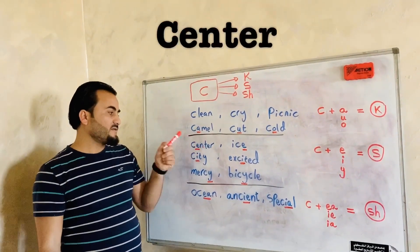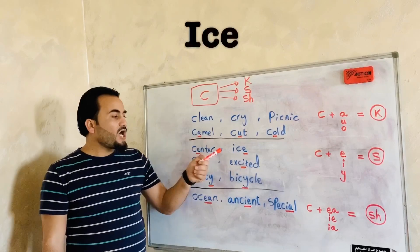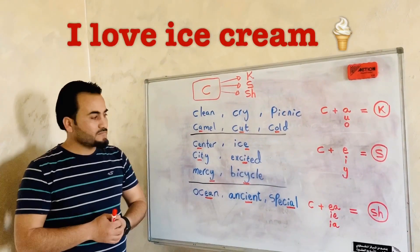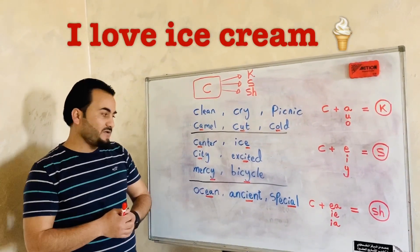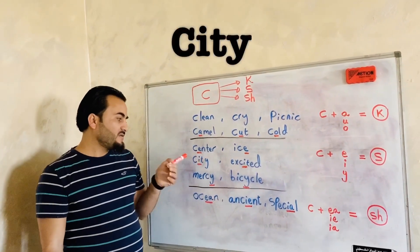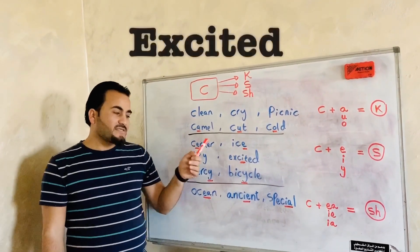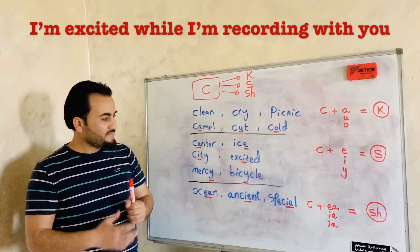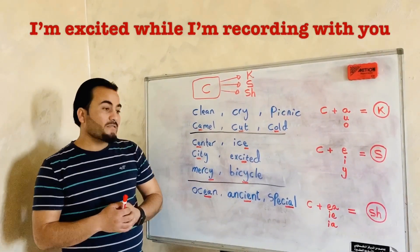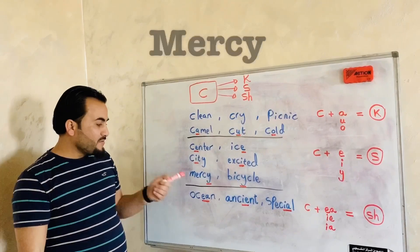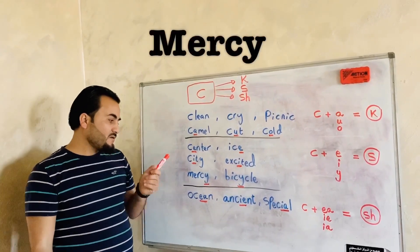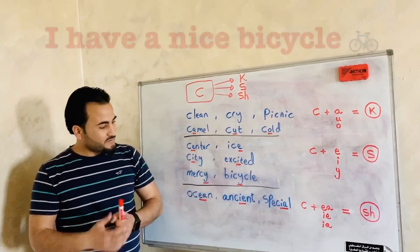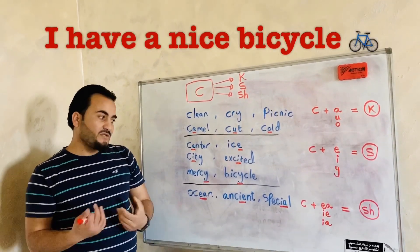Center. Ice. I love ice cream. City. Excited. I am very excited while I'm recording this video with you. Mercy. Bicycle. I have a nice bicycle. Very nice.